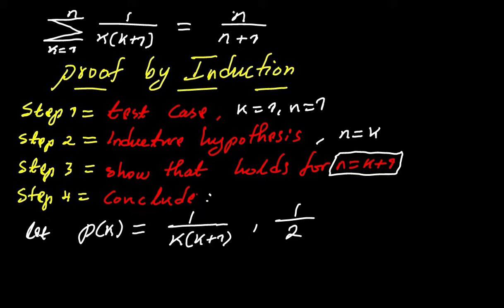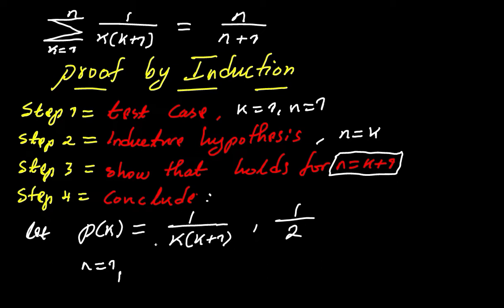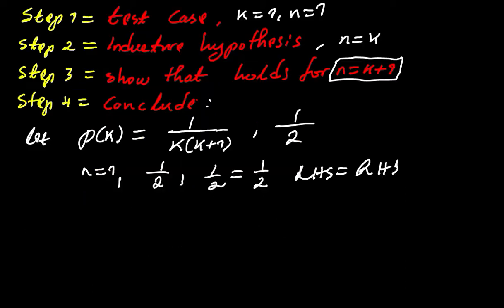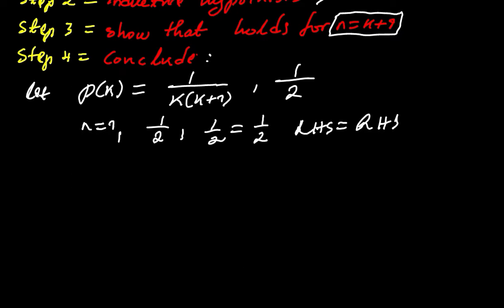We also have to show it's true for the right hand side. When n equals one, we get one over one plus one, which is two — that's also one half. We see that one half equals one half, showing the left hand side equals the right hand side. Once this is true we can proceed to the next step. If the initial cases are not equal, you simply conclude that the proof cannot be demonstrated through proof by induction.